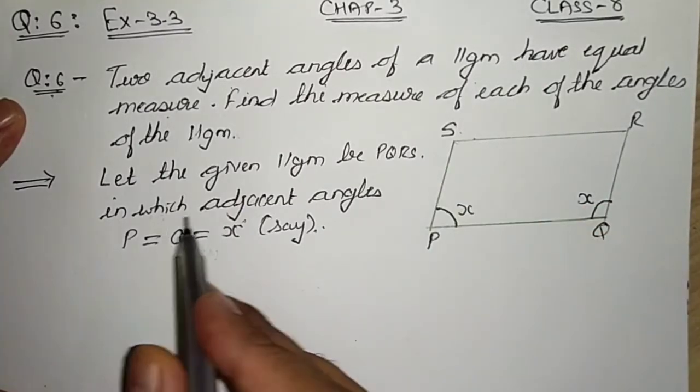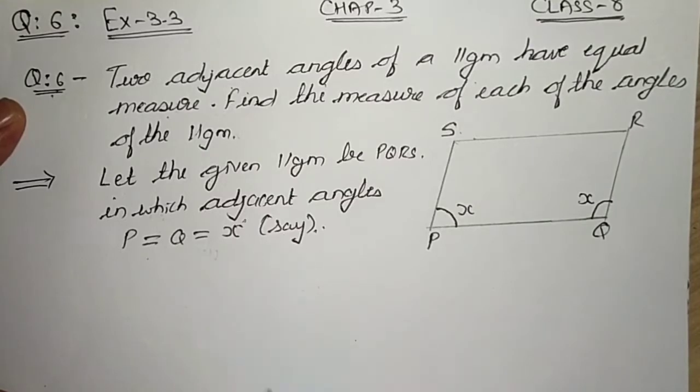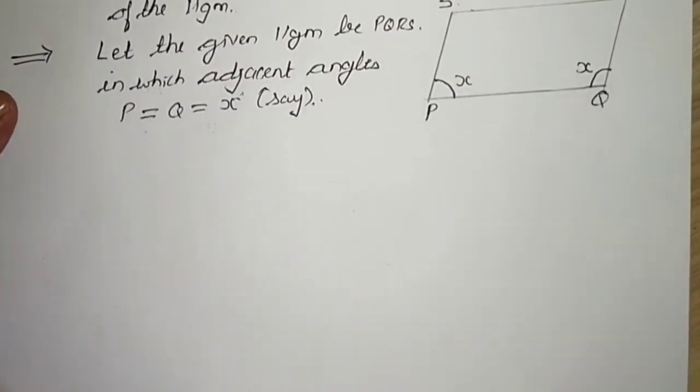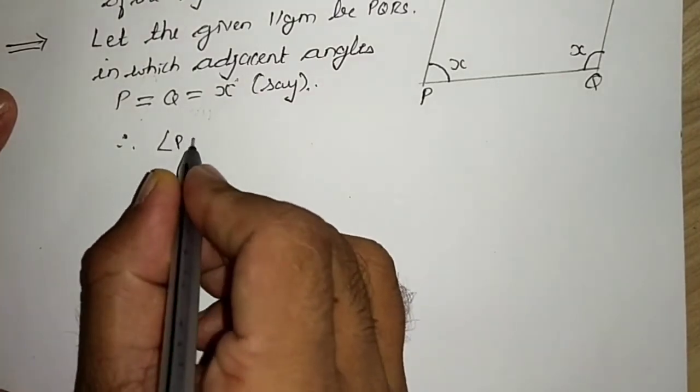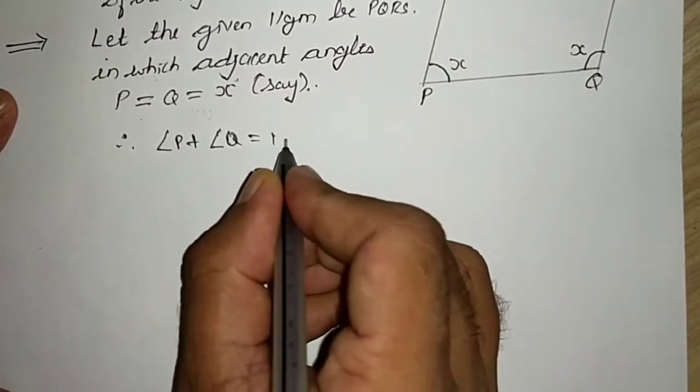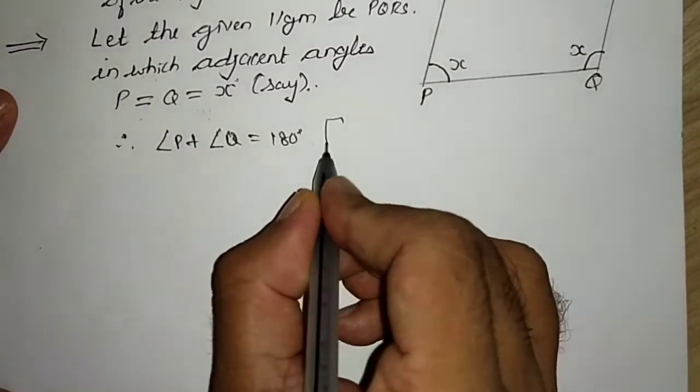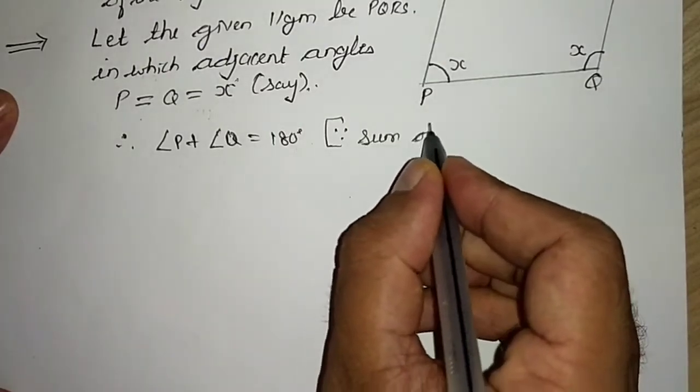Therefore, I can write angle P plus angle Q is equal to 180 degrees. Why? Because sum of adjacent angles of a parallelogram is supplementary.